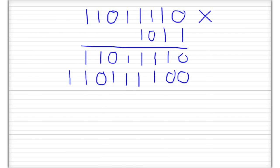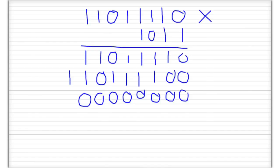Now we need to shift over two places and we're up to the next number. 0 times 0 is 0 — in fact these are all going to be 0s: 0 times 1 is 0, 0 times 1 is 0, 0 times 1 is 0, 0 times 1 is 0, 0 times 1 is 0, 0 times 0 is 0, 0 times 1 is 0, 0 times 1 is 0, and 0 times 1 is 0.